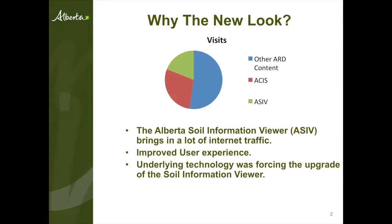Another reason we did this was to improve the user experience. The underlying technology was forcing us to upgrade the Soil Viewer, and while we were doing that we thought we'd add a bit more functionality — something we tried to do in the first version but didn't quite work out. We get about 2,600 visits in an average month, sometimes more, sometimes less, and that's been consistent over about a year.